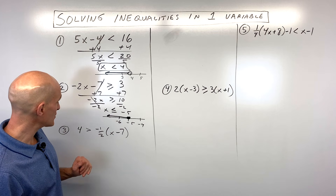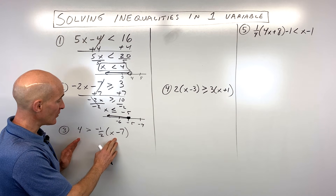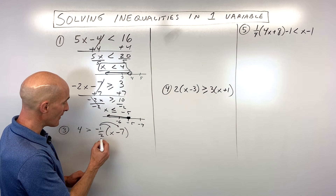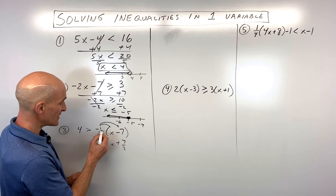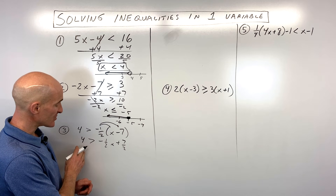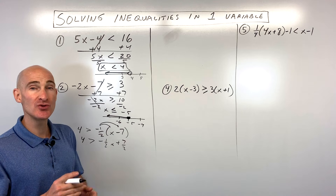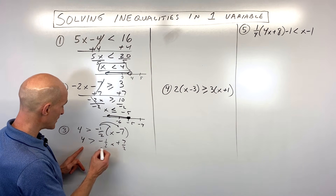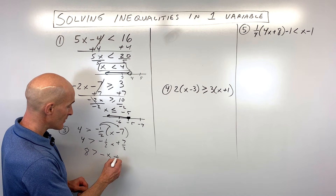Number 3 is a little bit more challenging because we have the variable on the right side. Let's start by distributing the negative one-half, so that's negative one-half x plus seven-halves, because negative times a negative is a positive. We've got 4 on the left. Now, because we have fractions, I'm going to multiply everything by 2 to clear the denominators. That gives us 8 is greater than negative 1x plus 7.